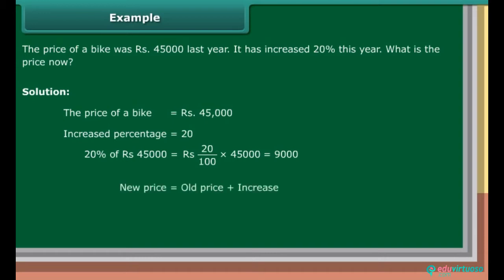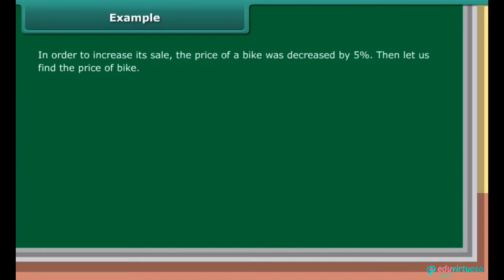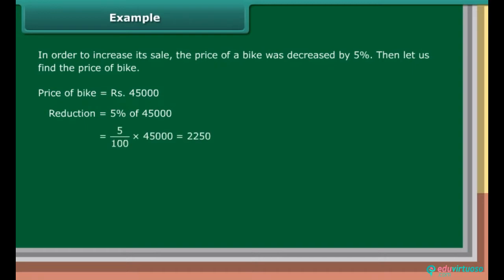New price is equal to old price plus increase, which is equal to Rs. 45,000 plus Rs. 9,000, which is equal to Rs. 54,000. In order to increase its sale, the price of a bike was decreased by 5%. Price of bike is equal to Rs. 45,000. Reduction is equal to 5% of Rs. 45,000, which is equal to Rs. 5 upon 100 into Rs. 45,000, which is equal to Rs. 2,250.